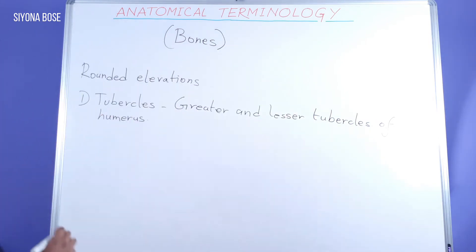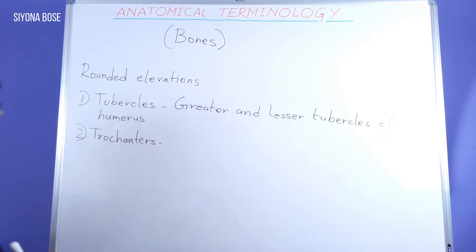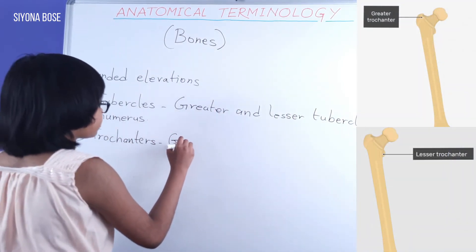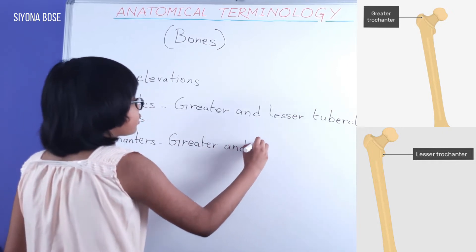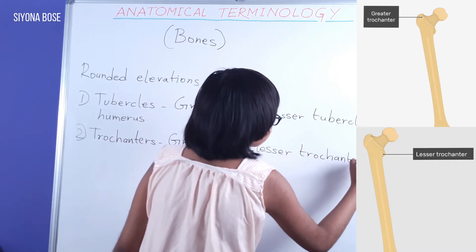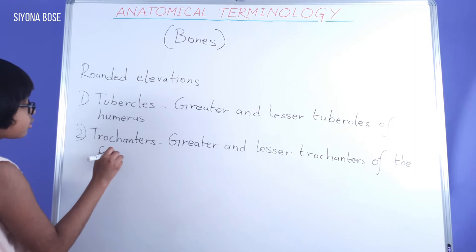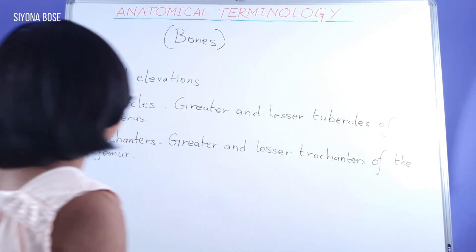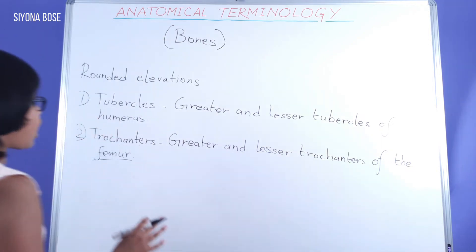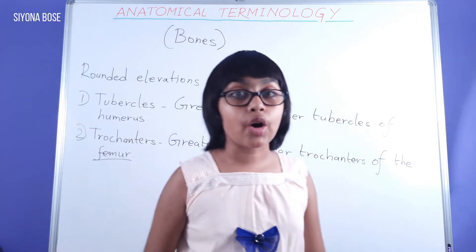Our next term in rounded elevations is trochanters — the greater and the lesser trochanters of the femur, or the thigh bone as we call it in common terms. Like the greater and lesser tubercles in the case of the humerus, similarly the femur has trochanters: the greater and the lesser trochanters of the femur.